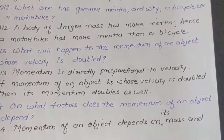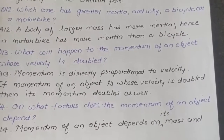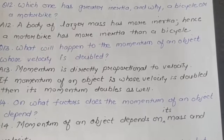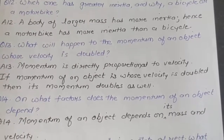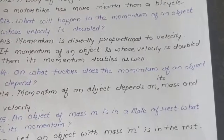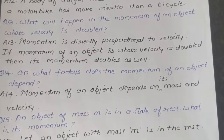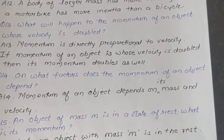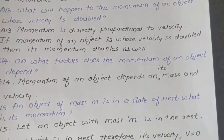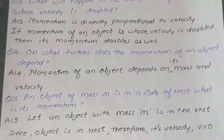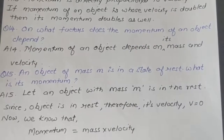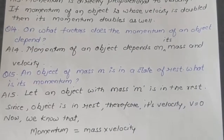Answer: Since momentum is directly proportional to velocity, if the velocity of an object is doubled then its momentum doubles as well. Question 14: On what factors does the momentum of an object depend? Answer: Momentum of an object depends on its mass and velocity.